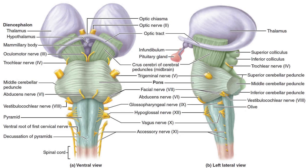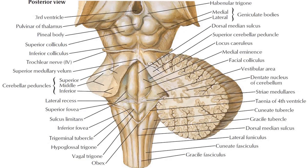The midbrain is continuous with the thalamus of the diencephalon through the tentorial notch. The brainstem is very small, making up around only 2.6% of the brain's total weight.